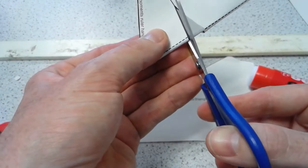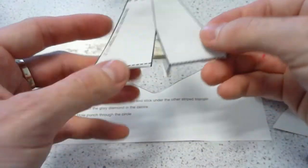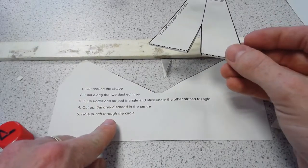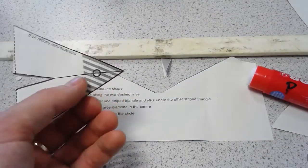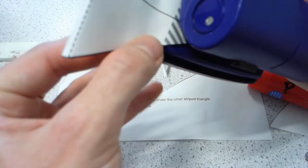Technically it's a rhombus, of course, but I called it a diamond. We're then going to hole punch through the circle. This is the one bit where you want to make sure you've got the hole punch lined up nicely along that center line.